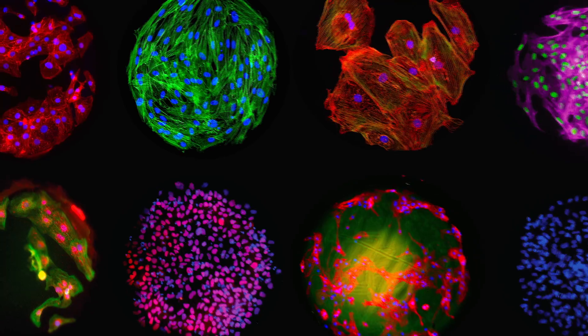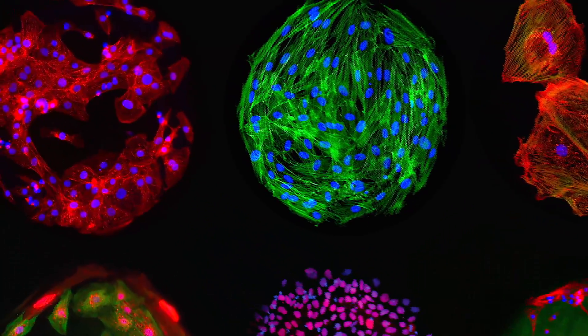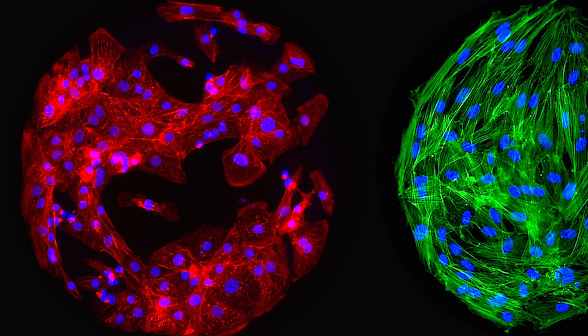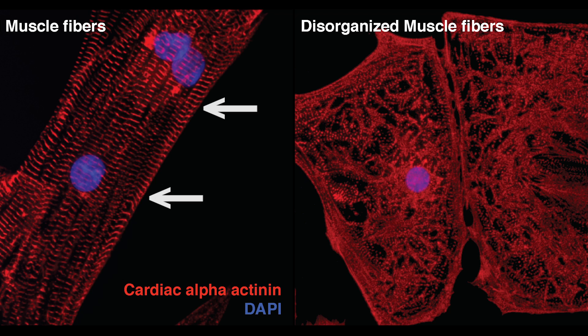One application for these screens is to look for materials that will support a more mature phenotype of the cardiomyocyte, or heart cell. One way we look to see if a cardiomyocyte is more mature is to stain for cardiac alpha actinin, which in the image can be seen as the red stain. This protein is found in the muscle fibers within the heart cell, and if they are banded parallel to each other and at an optimal spacing, then this indicates the cardiomyocyte is more mature, compared to an immature cardiomyocyte which would display disorganized banding.